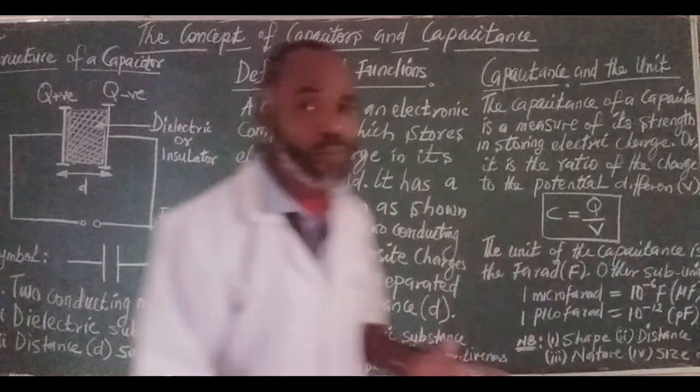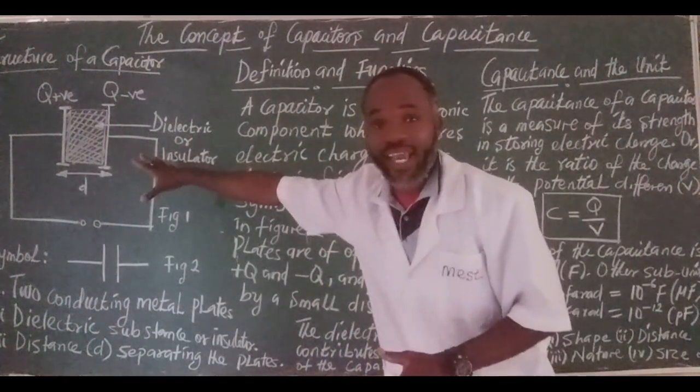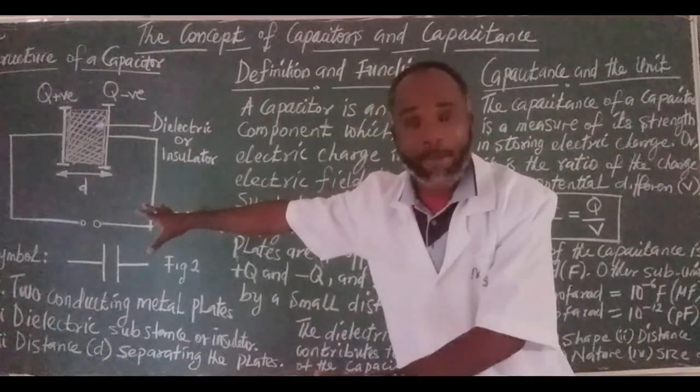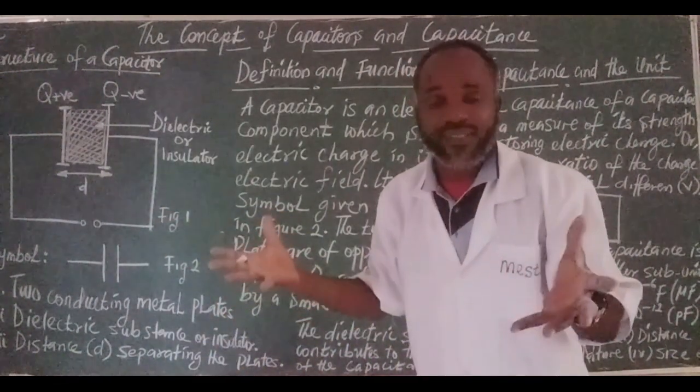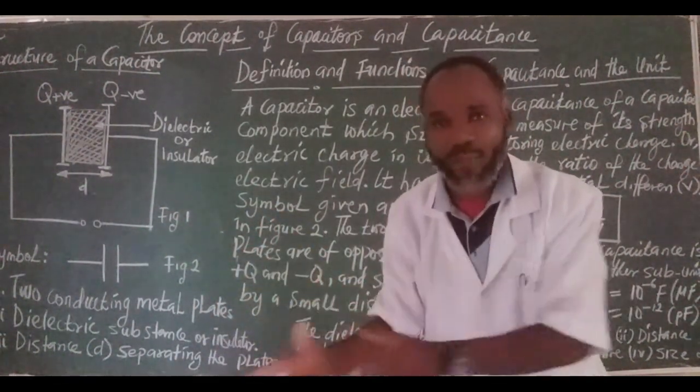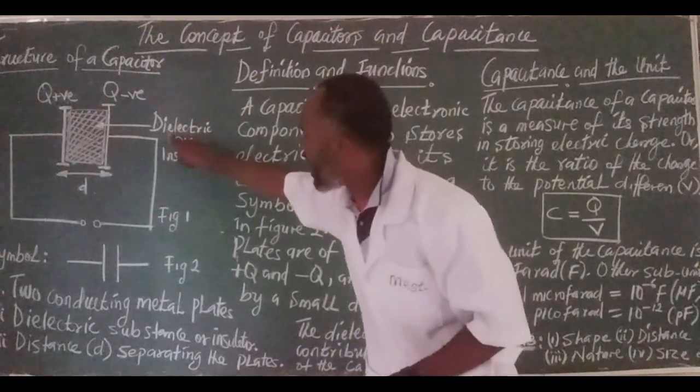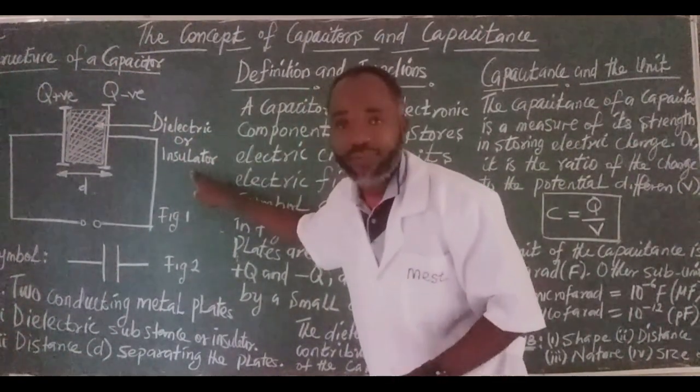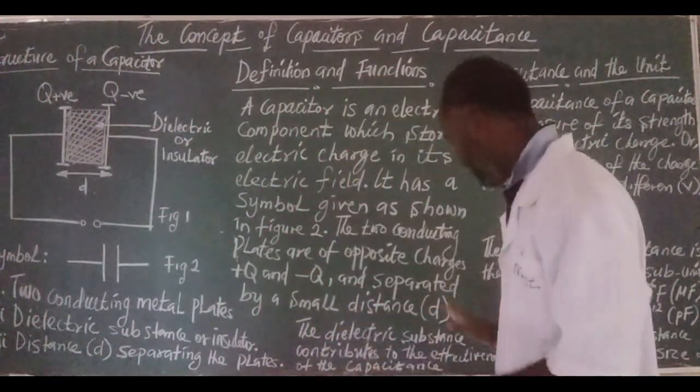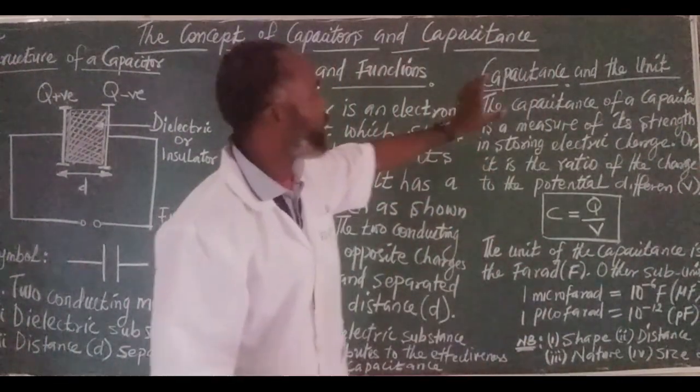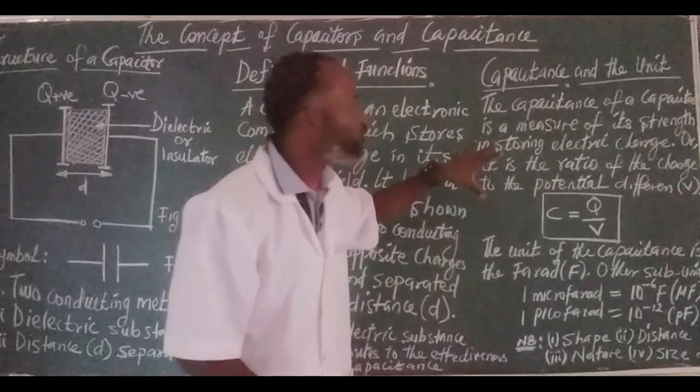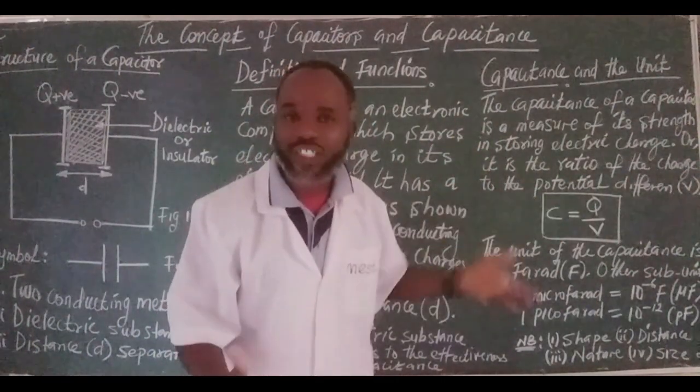It's very important when you have to clip this way and the dielectric substance is there. It helps, it improves or increases the capacitance of a capacitor. I'm talking about the dielectric substance or insulator. If that is the case, we also have some amount of capacitance and the units. So, the capacitance of a capacitor, what does it mean?